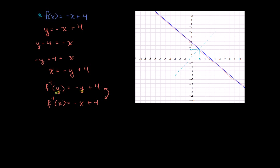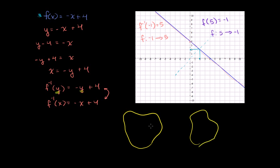Let's think about it another way. For the regular function, let me write it explicitly. Let's pick f of 5. f of 5 is equal to negative 1, or we could say the function f maps us from 5 to negative 1. Now what does f inverse do? f inverse of negative 1 is equal to 5, or we could say that f maps us from negative 1 to 5. So if you think about the sets — the domains and ranges — f takes us from 5 to negative 1, and f inverse takes us back from negative 1 to 5, just like it's supposed to do.